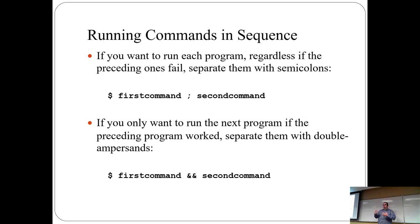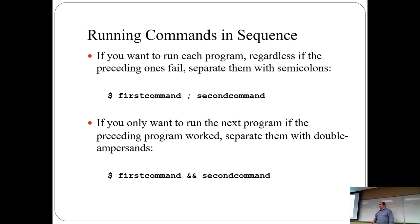If you want to run two commands but the second one is only allowed to run if the first one succeeded, use double ampersands (&&). Unless the first command returns zero — which means successful — it doesn't run the second command. If it returns an exit status of zero, it'll run the second command.